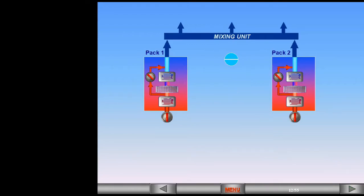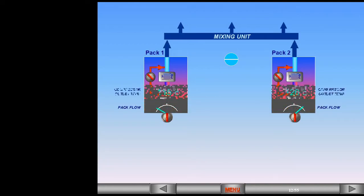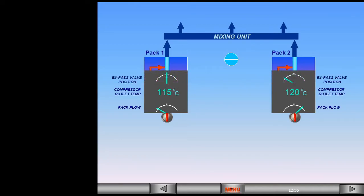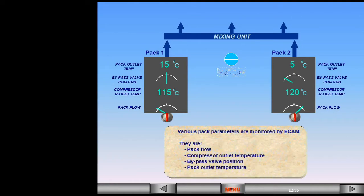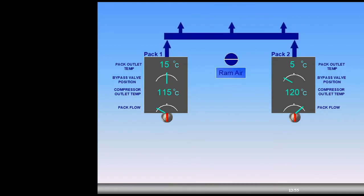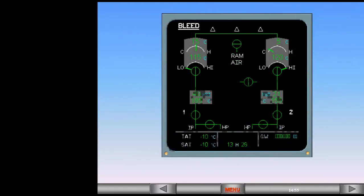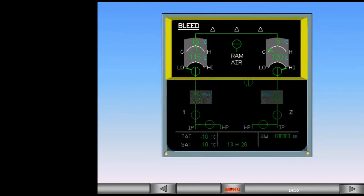Various pack parameters are monitored by ECAM. They are pack flow, compressor outlet temperature, bypass valve position, and pack outlet temperature. These parameters along with the valve positions are displayed on the upper part of the ECAM bleed page.